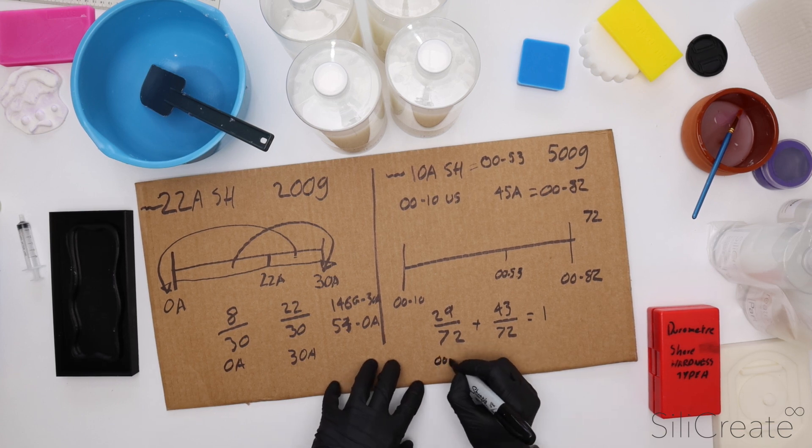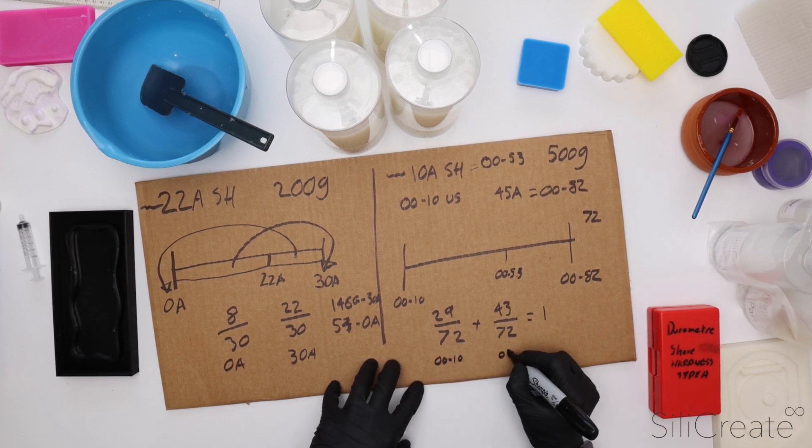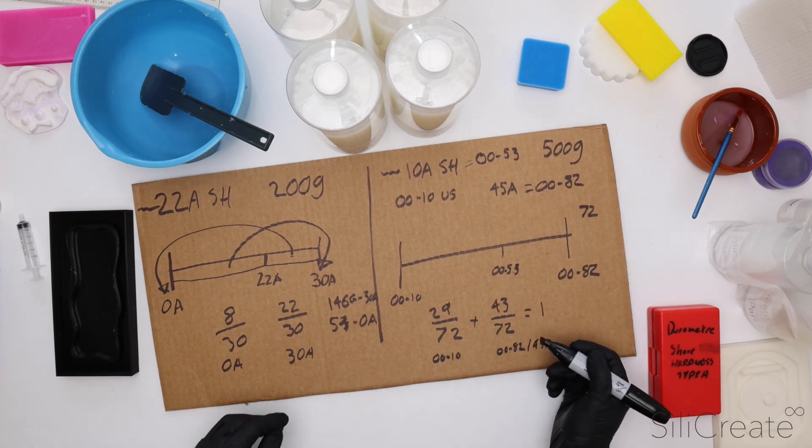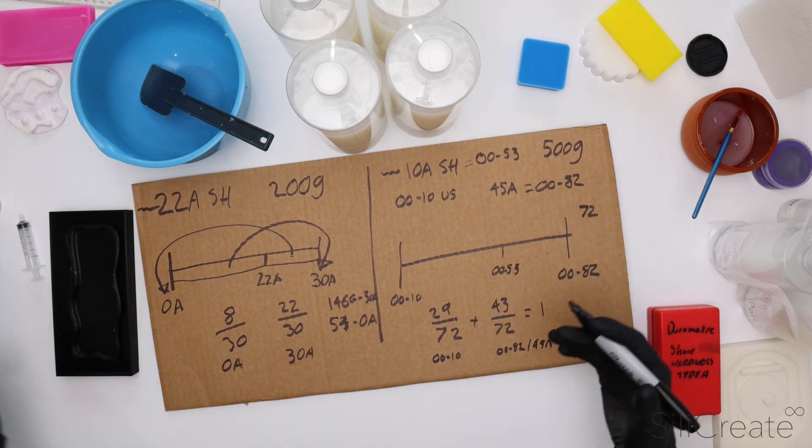And yeah, so we know we've got 0010 and 0082 slash 45A. That's the ratios that we're going to go with in order to figure out how much to use.